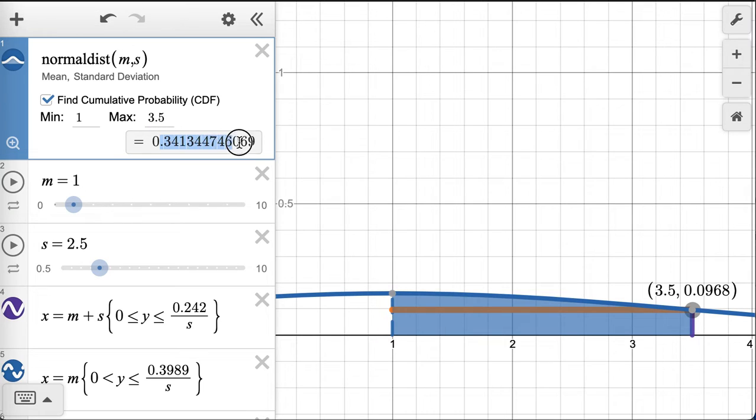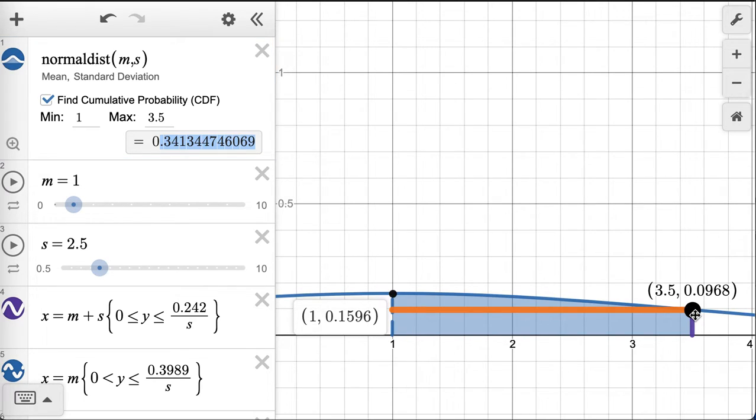That area is still 34%. So the distance from the mean here in the middle out to the standard deviation here encompasses an area under the curve that is always 34%.